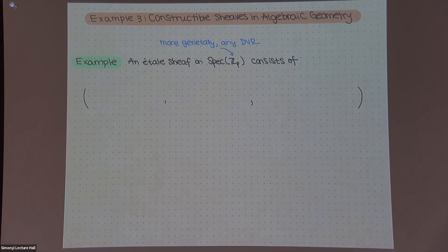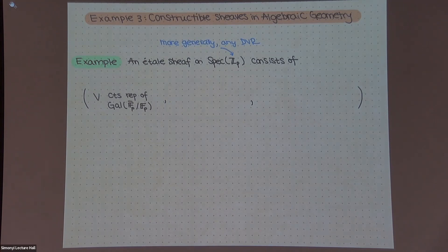So maybe the analog of this, like, you know, just line stratified by a point, and the rest of it is something like the spectrum of a DVR. For this example, let's take the DVR to be the p-adics. So this is some ring with two prime ideals, the thing generated by p, and then zero. So what one of these sheaves is you can work out is a triple of data, kind of like what we were seeing before. So it consists of a continuous representation of the Galois group of F_p, which is the quotient of Z_p by p.